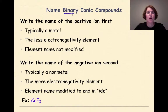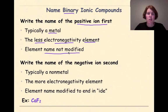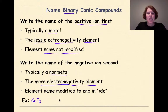The word 'binary' means two. We're talking ionic, so this is between a metal and a nonmetal coming together to form a more stable compound. The first thing you need to do is write the name of the positive ion first — typically in ionic compounds this is going to be your metal or the less electronegative element. When you write binary ionic compounds, the first element is not modified. The second element is different: write the name of the negative ion second — typically the nonmetal or more electronegative element. We modify it slightly by changing the ending to -ide.